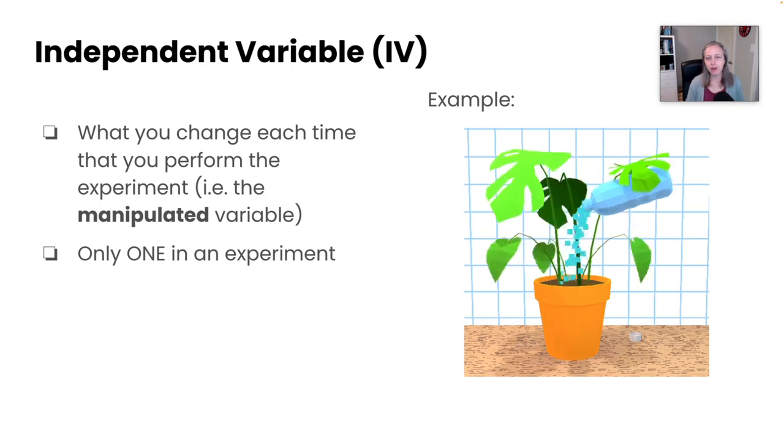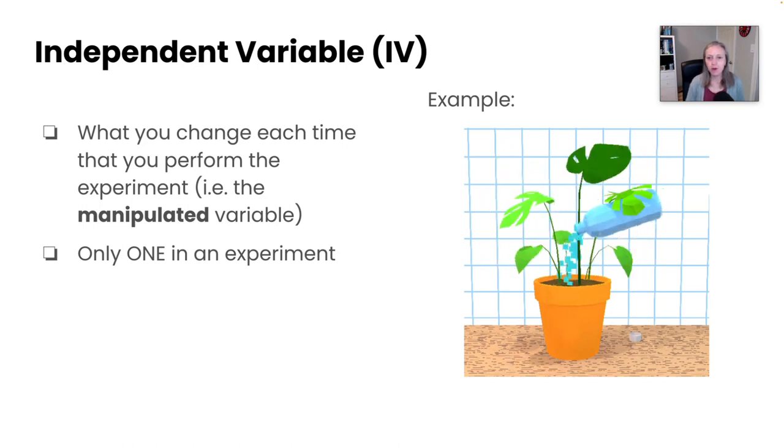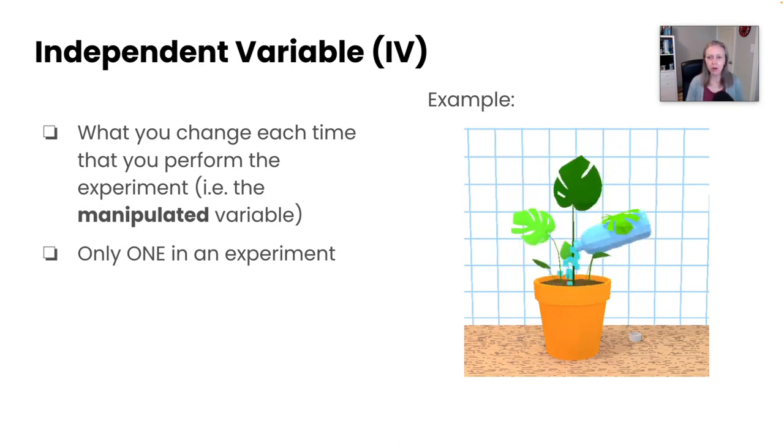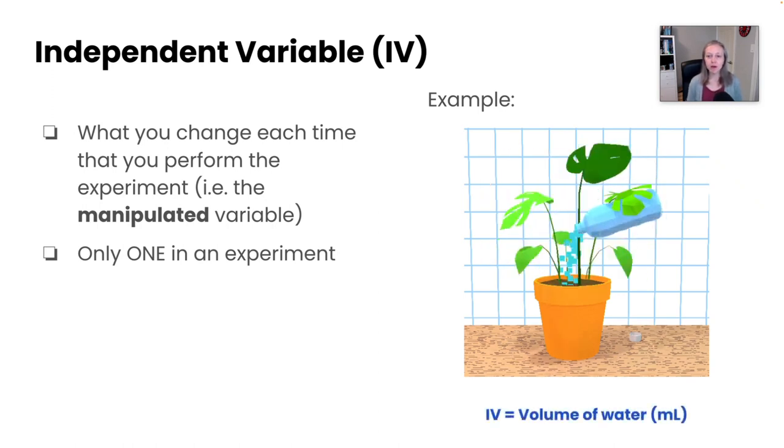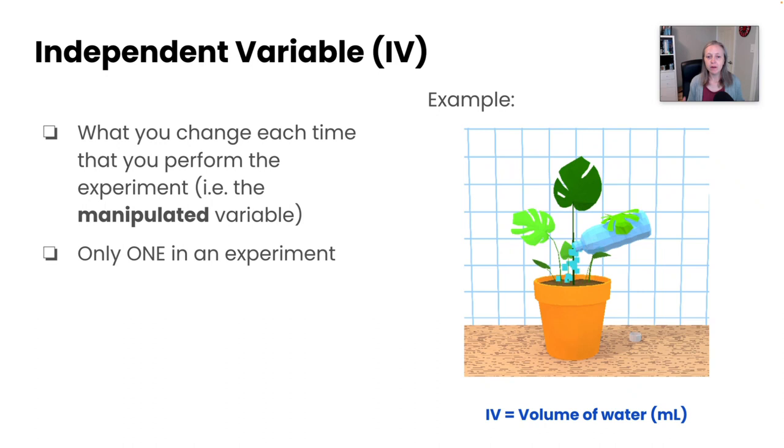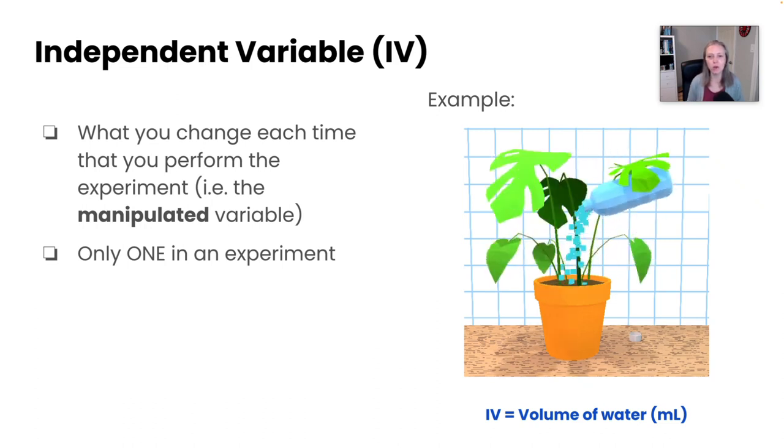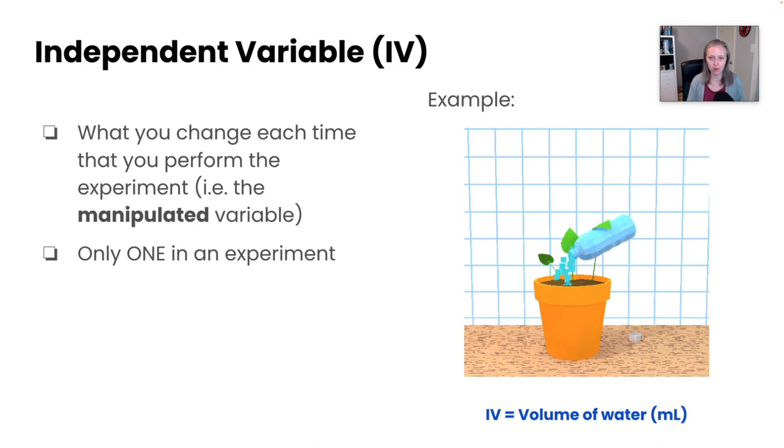So let's look at an example. If we were studying how the volume of water affects the growth of a plant, then what would the independent variable be? The independent variable here would be something like the volume of water that we add to the plant. You could measure this in milliliters, and that's a really nice way of quantifying that independent variable.